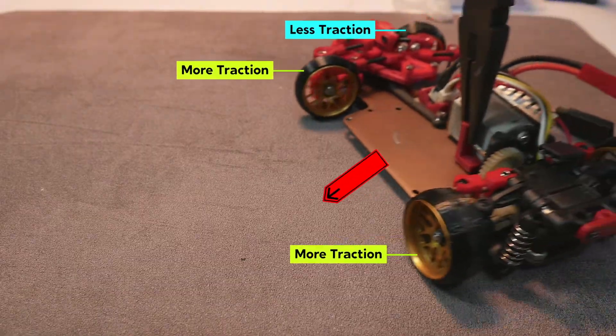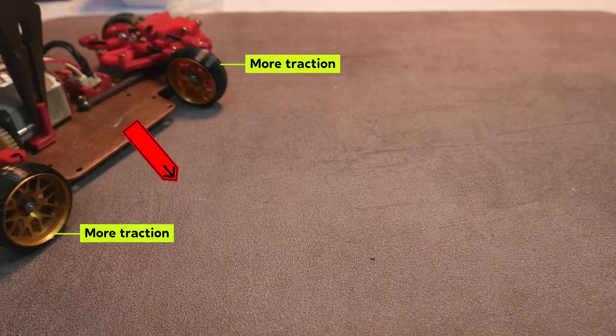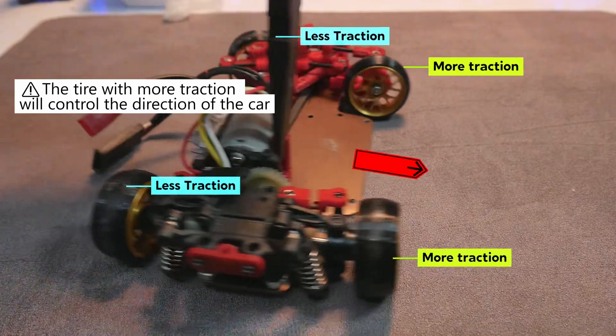When the car is drifting, the inner rear wheel will have more traction than the outer wheel. Therefore, the car's control is most influenced by the inner wheel.